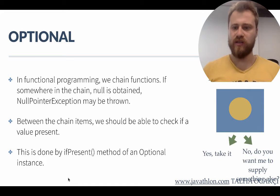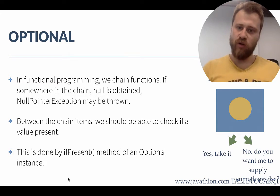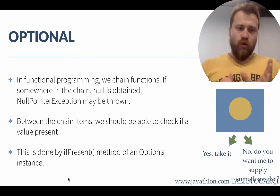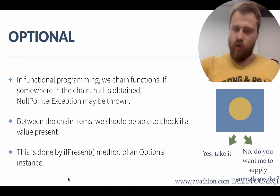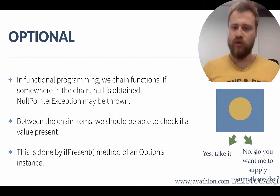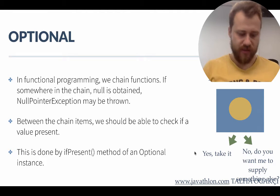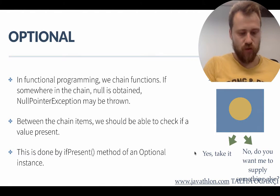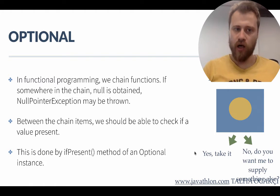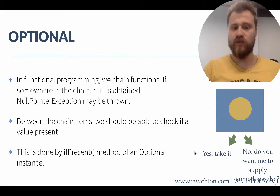That class is Optional. The Optional class is used for avoiding null pointer exceptions. It basically stores whether a memory address has an object inside or not. It may return 'no object inside' or 'yes, here is the object.' In functional programming we chain functions — passing the result of one directly into the next. If one function returns null, that null becomes input to the next function, which may then throw a null pointer exception.